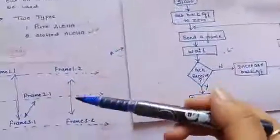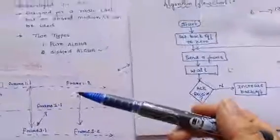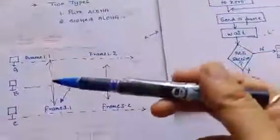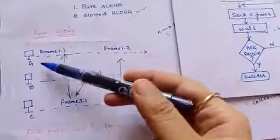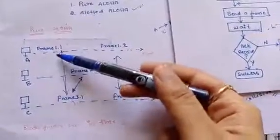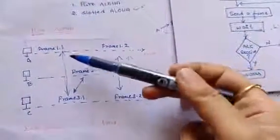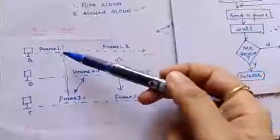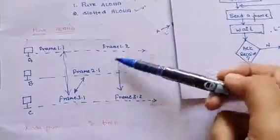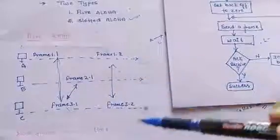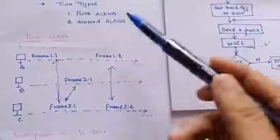In pure ALOHA, there are chances of collision. If A, B, and C are three stations, they can send data at any time, so there are chances of collision. See here, collision here and here also collision. To avoid or decrease collision, we use slotted ALOHA.